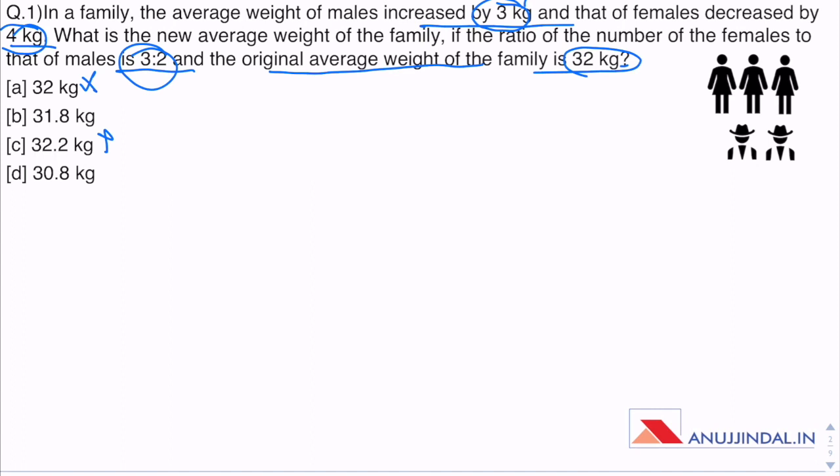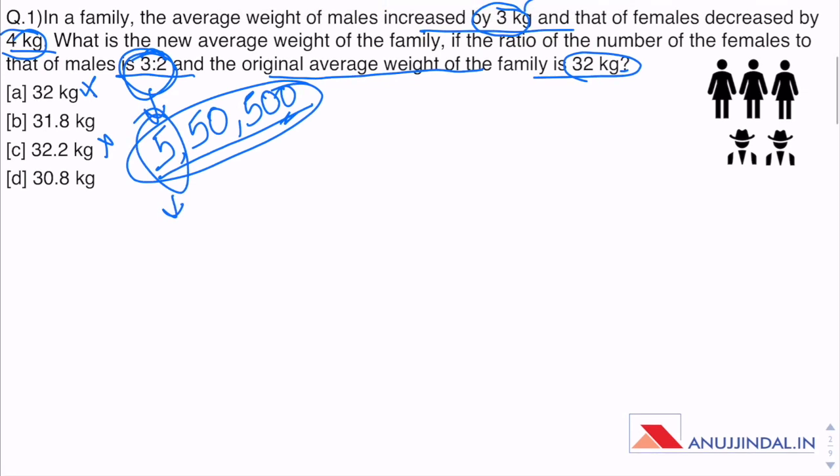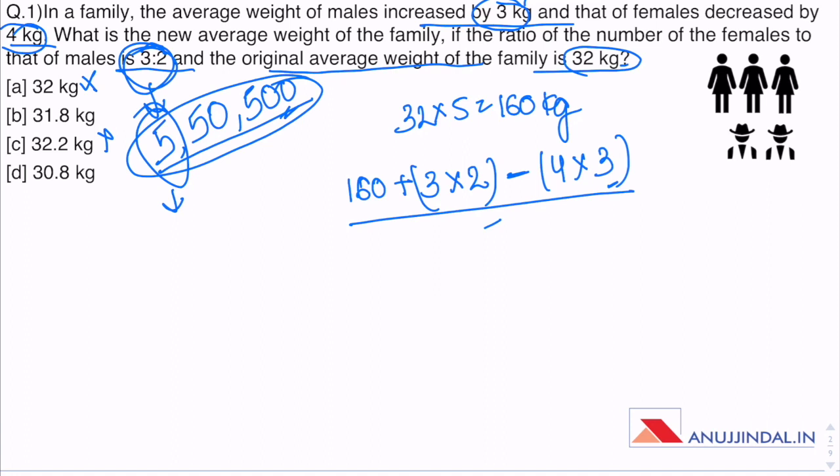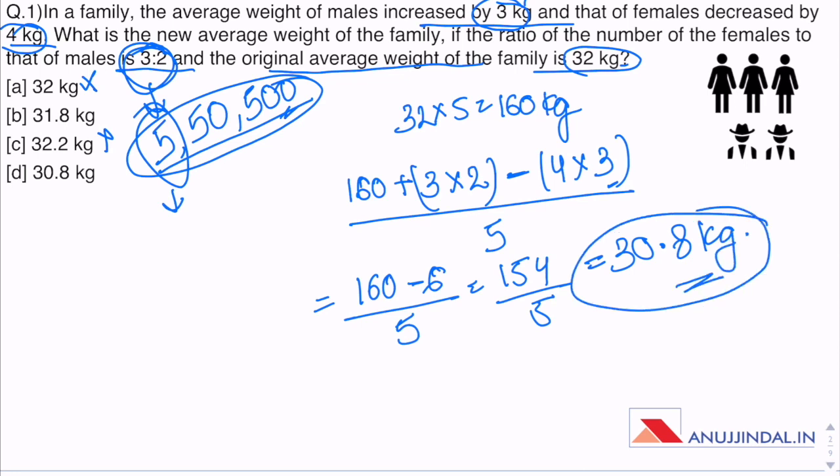Now moving further, as the ratio is 3 to 2, let's assume the number of people in the family to be 5, or you may assume 50 or 500. Just be sure that whatever number you assume can easily be broken down into this ratio. When we assume the number of people is 5, then sum of their weights is 160 kg. The average weight of males increases by 3 kg, so 3 into 2, minus average weight of females decreases by 4 kg, 4 into 3, divided by 5 is going to be the new average. So we see 160 minus 6 divided by 5, 154 divided by 5 which gives us 30.8 kg. This is the new average weight of the family.